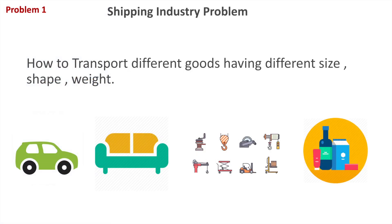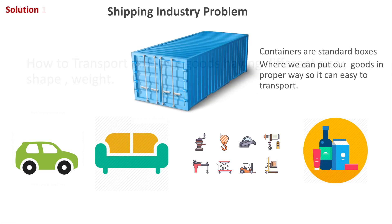To understand Docker, we first need to understand the common problem of the shipping industry. The problem is how to transport different types of goods having different sizes, shapes, and weights. For example, if you are a manufacturer of fragile items or furniture, transporting those items from one place to another is very difficult because they may break during travel. To solve this problem, containers came into the picture — containers are standard boxes where you can put your goods in a proper way so they are easy to transport.